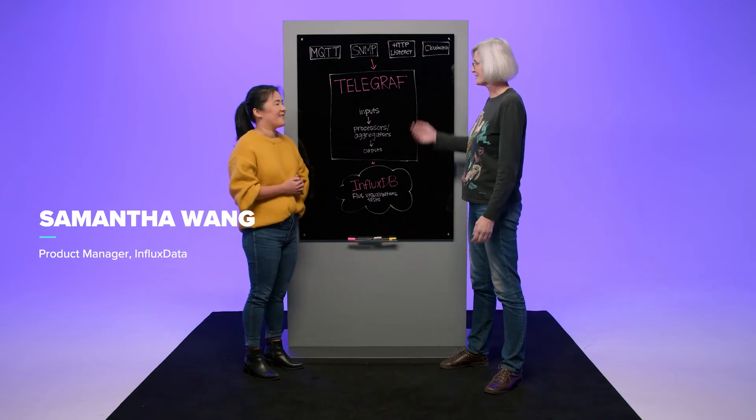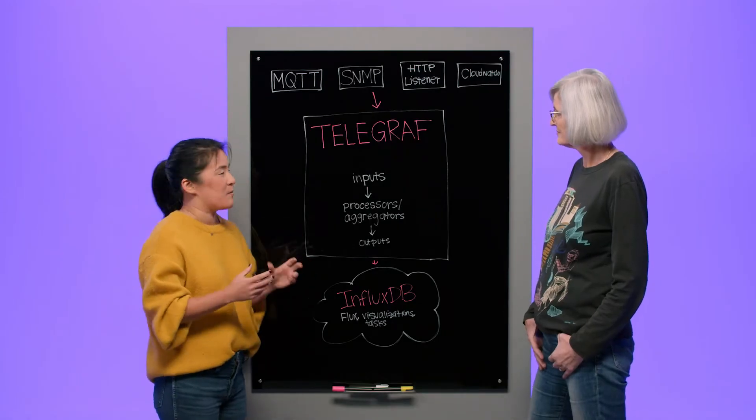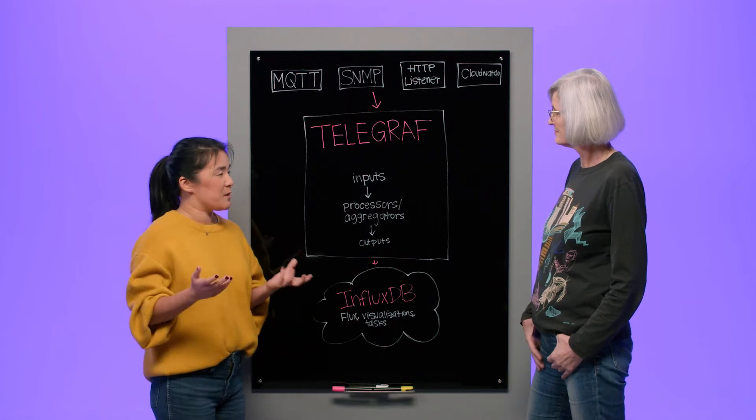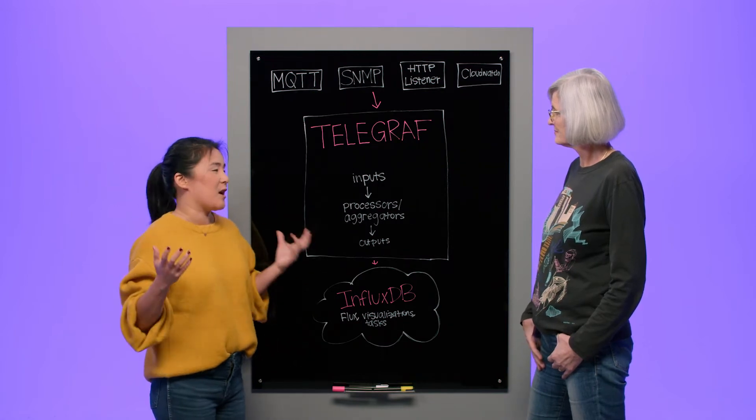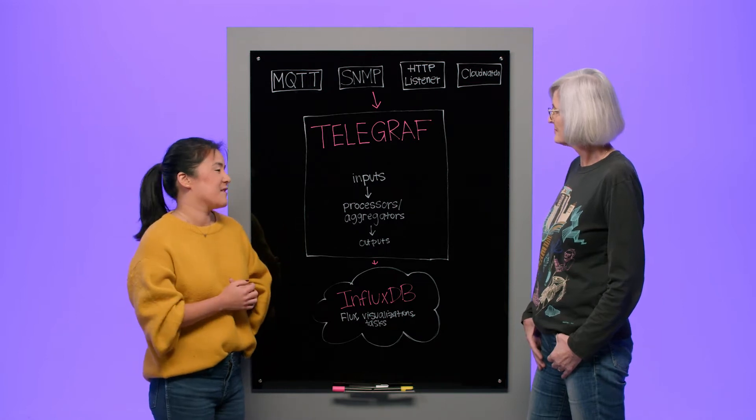So Samantha, what's Telegraf? Telegraf is InfluxData's open-source data collection agent. It's written in Go. It's a single binary that doesn't require any external dependencies and it also has a minimal memory footprint. So it can be downloaded on the smallest of your devices — it can be used on your at-home sensors or it can be used in large enterprise environments for whatever your monitoring solution is.